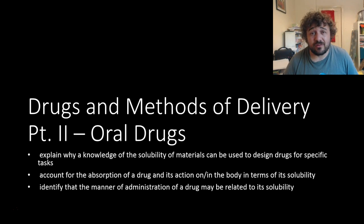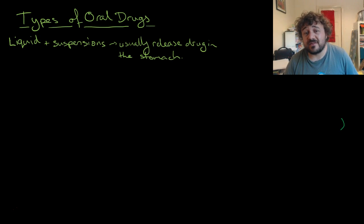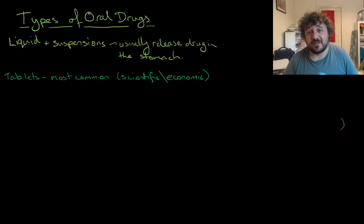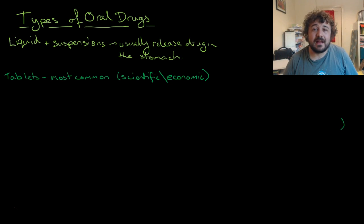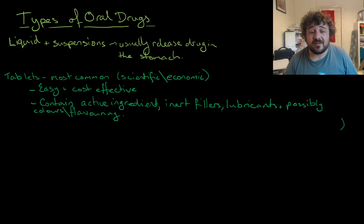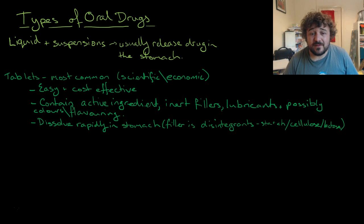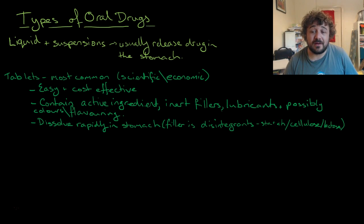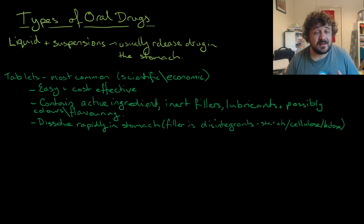Now we're going to talk about oral delivery. There are different types of oral drugs. There are liquid suspensions, which usually only release the drug in the stomach — very simple. There are tablets, which are the most common — we're talking about the powdery tablets here, not capsules. They're most common for scientific and economic reasons: they work and they're super cheap. They contain an active ingredient, some inert filler — often a sugar like lactose — lubricant, and possibly colors and flavoring. They rapidly dissolve because the filler is often a disintegrant, meaning it breaks down very easily. We're talking starch, cellulose, or lactose.